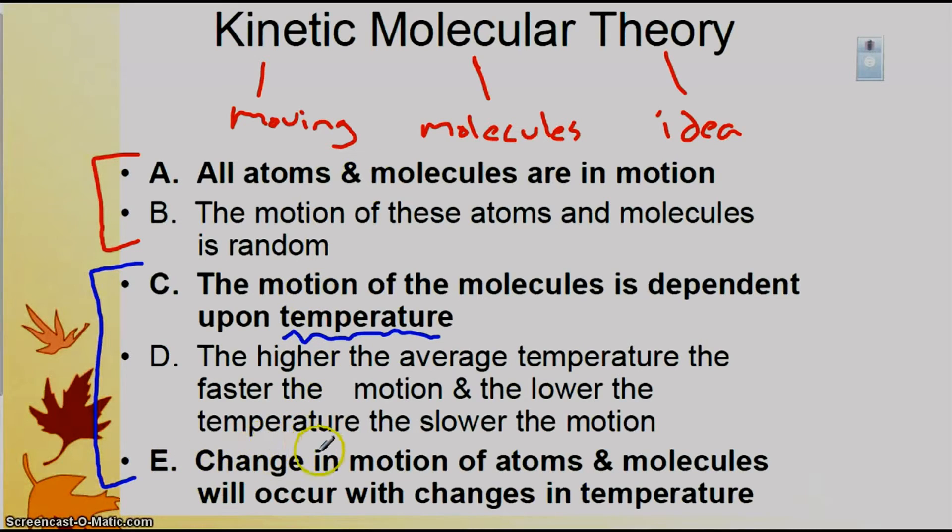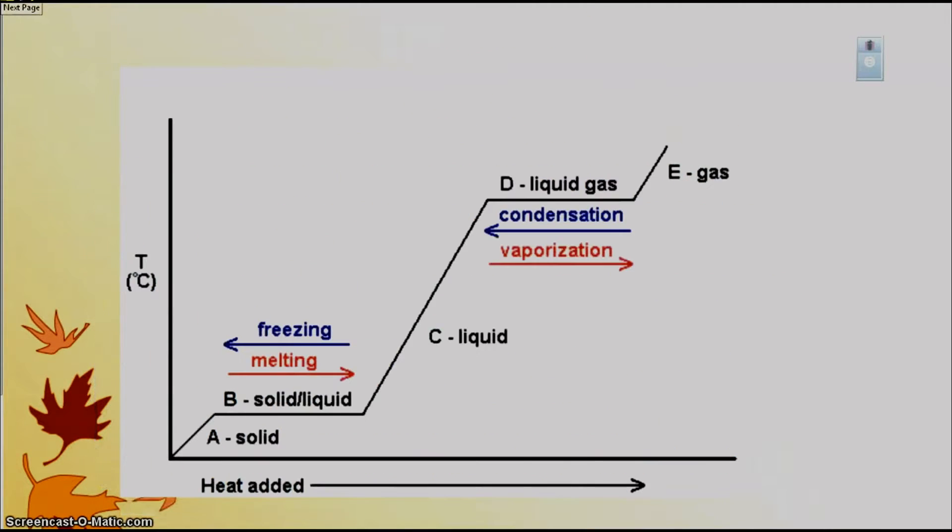The last part is a change in motion of atoms and molecules will occur with changes in temperature. So that means they're able to pass loosely over each other or they're right up close next to each other and they can't pass over each other at all. So these are the three parts of the kinetic molecular theory that we will be looking at in this goal.